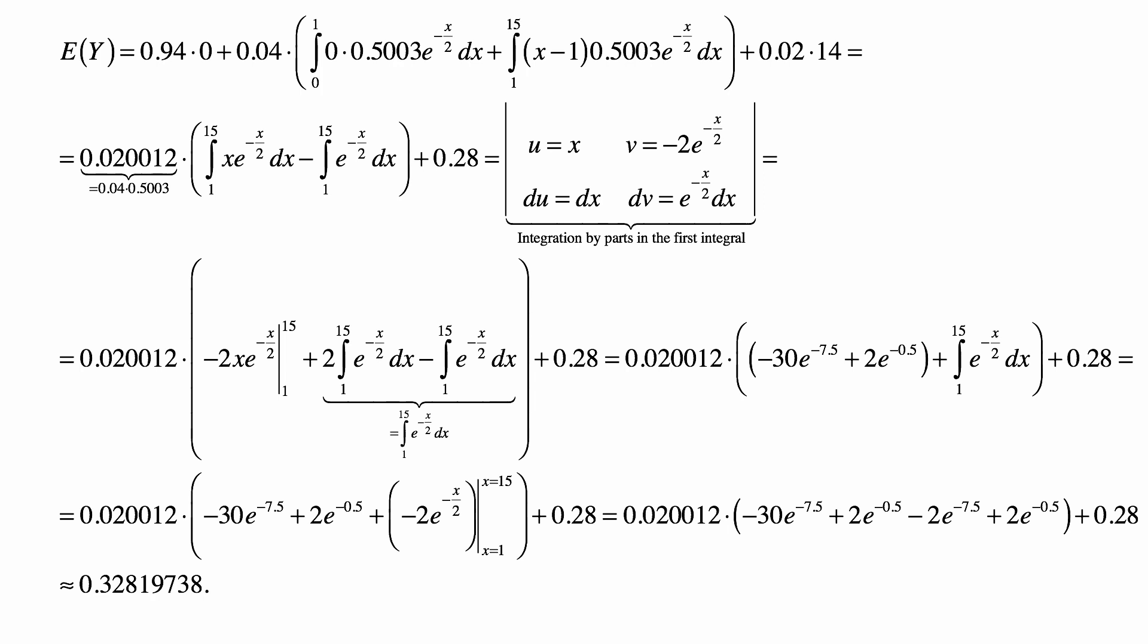The first of the two integrals is a little bit more complicated. We need to do integration by parts in it, so we do that. We take one function, u, to be X, and then du is dX. And then the other function, v, has to be such that dv is equal to what we see there, multiplied by X, which is e to the minus X over 2 dX. And, of course, the function whose derivative is equal to this is minus 2 times e to the minus X over 2.